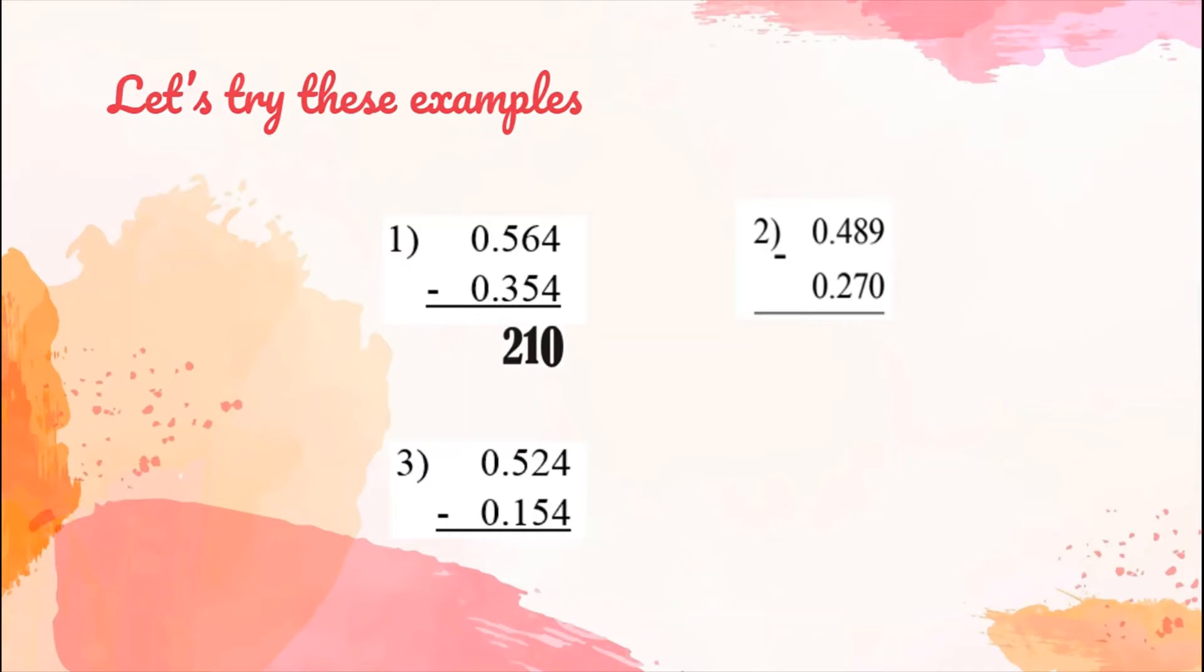Don't forget to align our decimal point. 0 minus 0, the answer is 0. So for our final answer, we have 0.210.